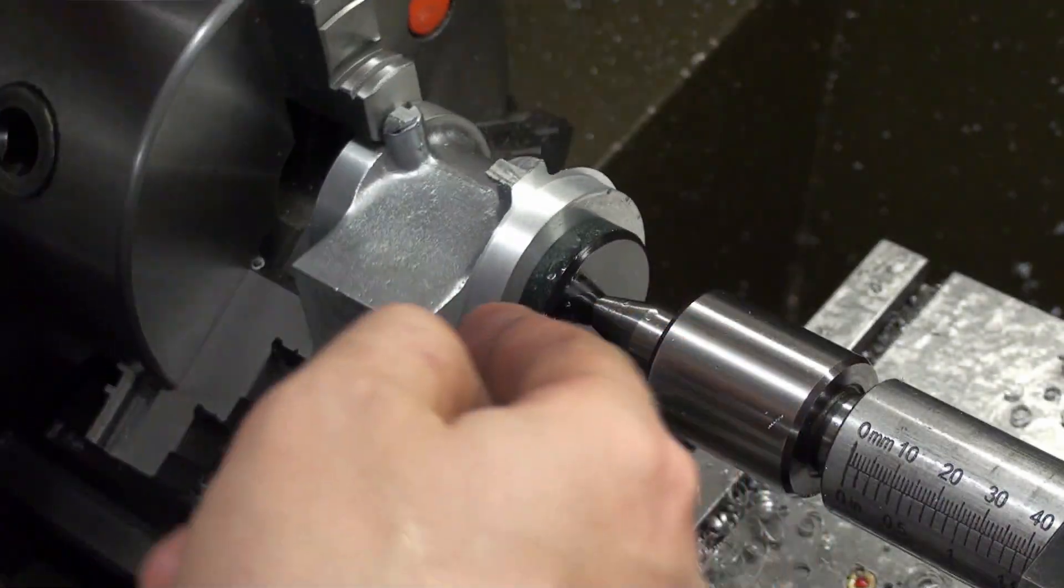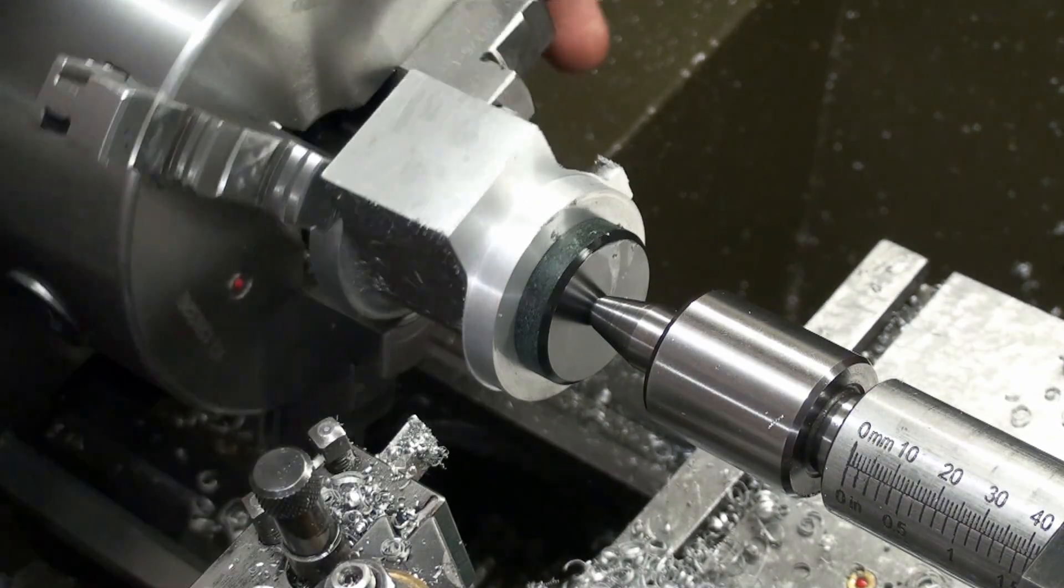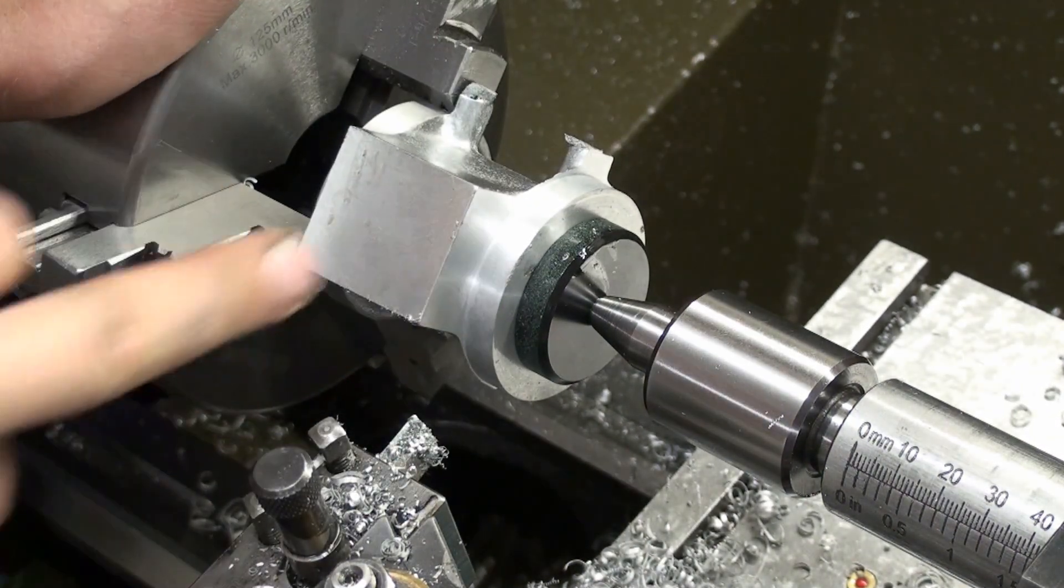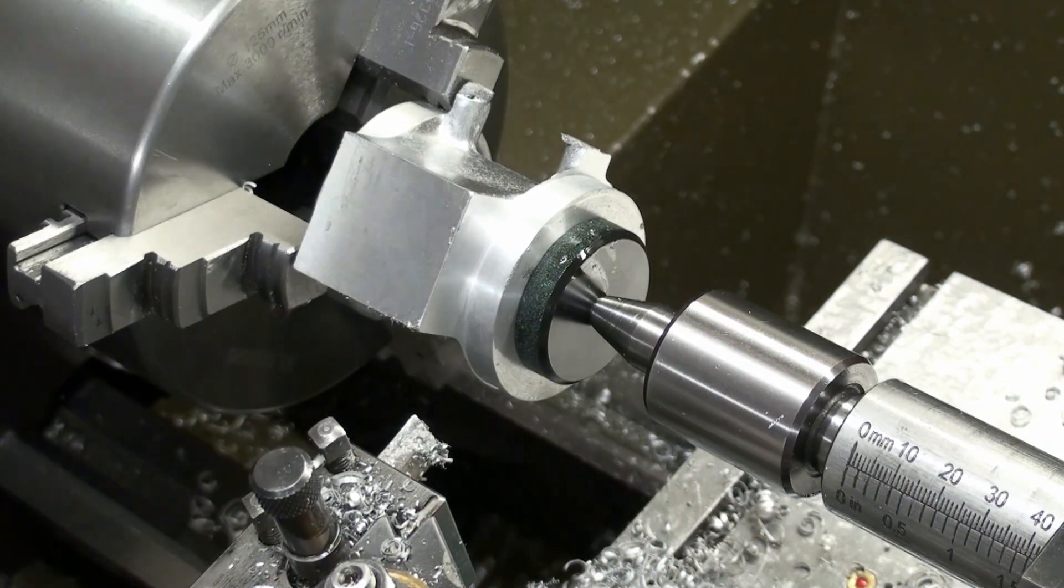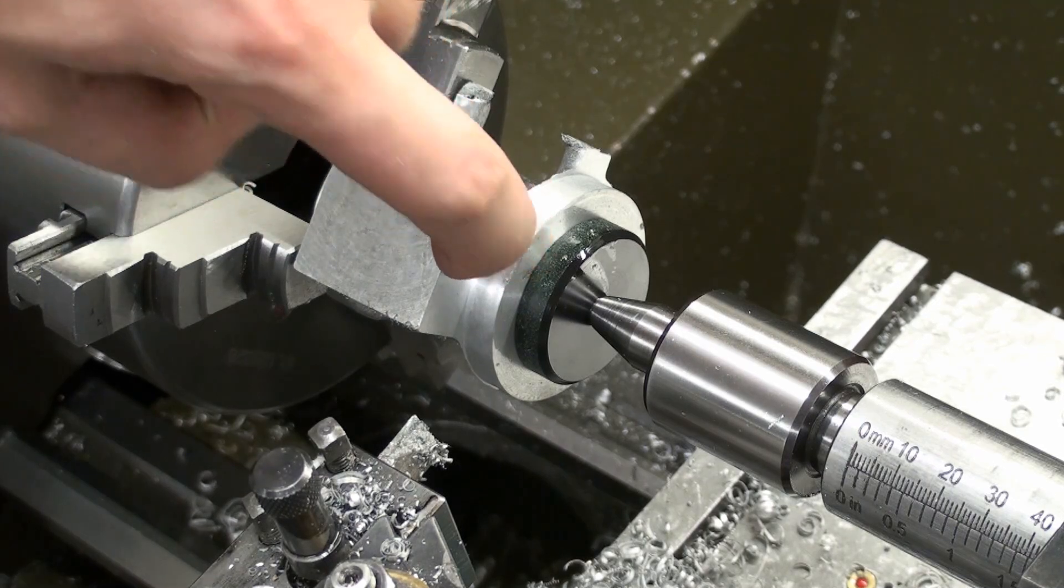And I pulled the tool out to define the surface, just to take a first skin pass on it. Now we will change to a lathe tool with a nice radius and finish this surface here.